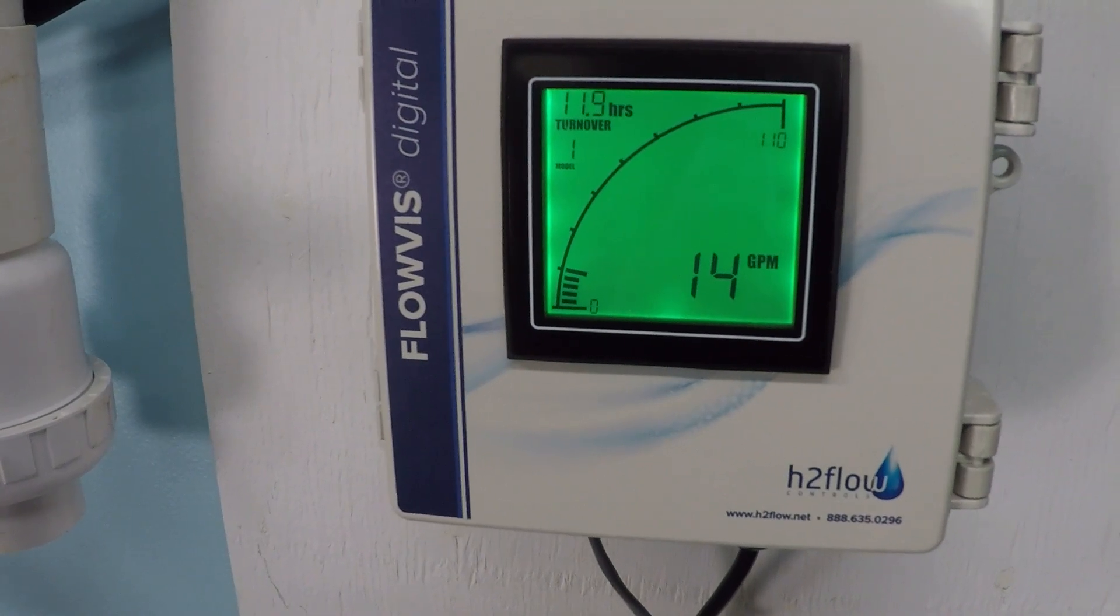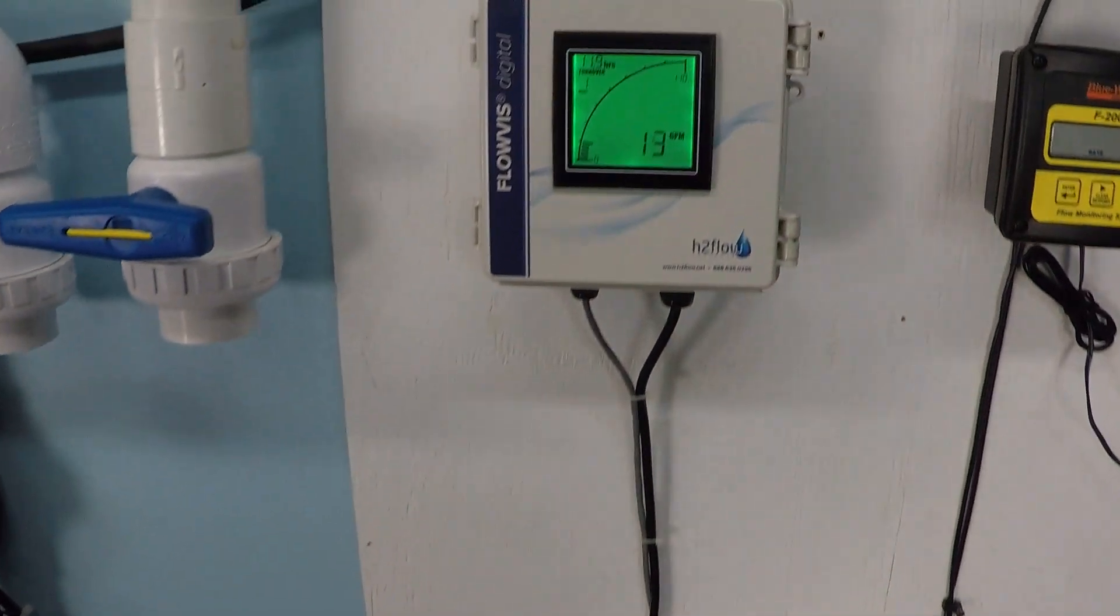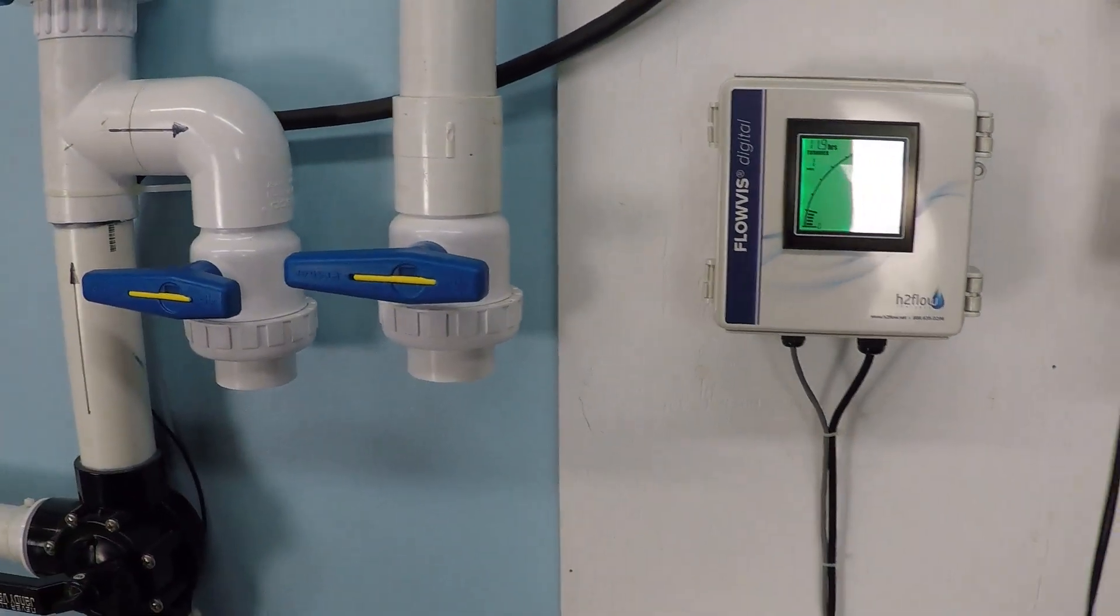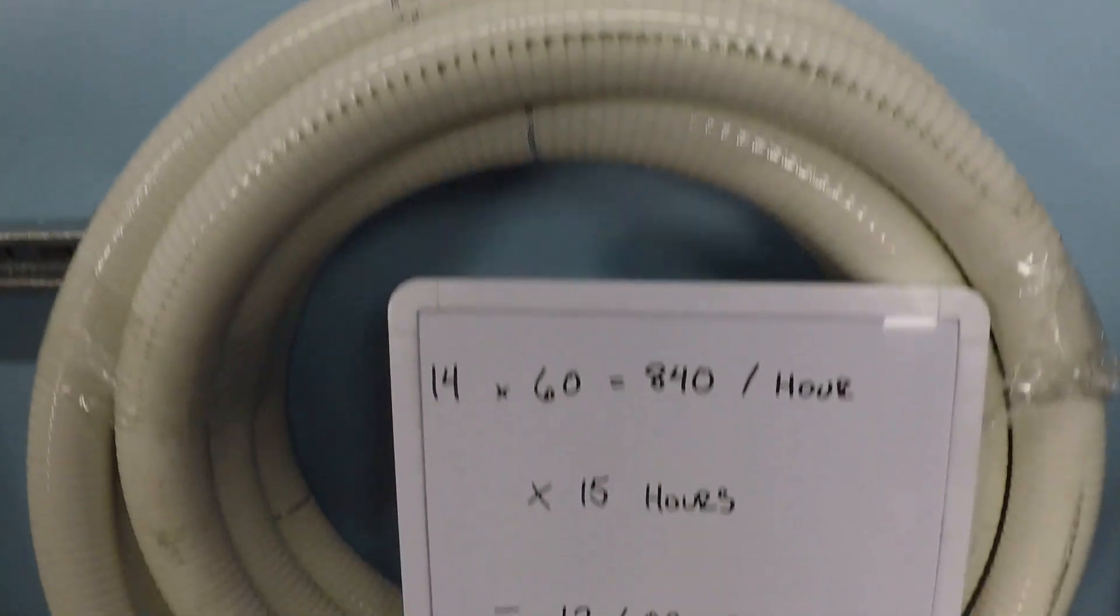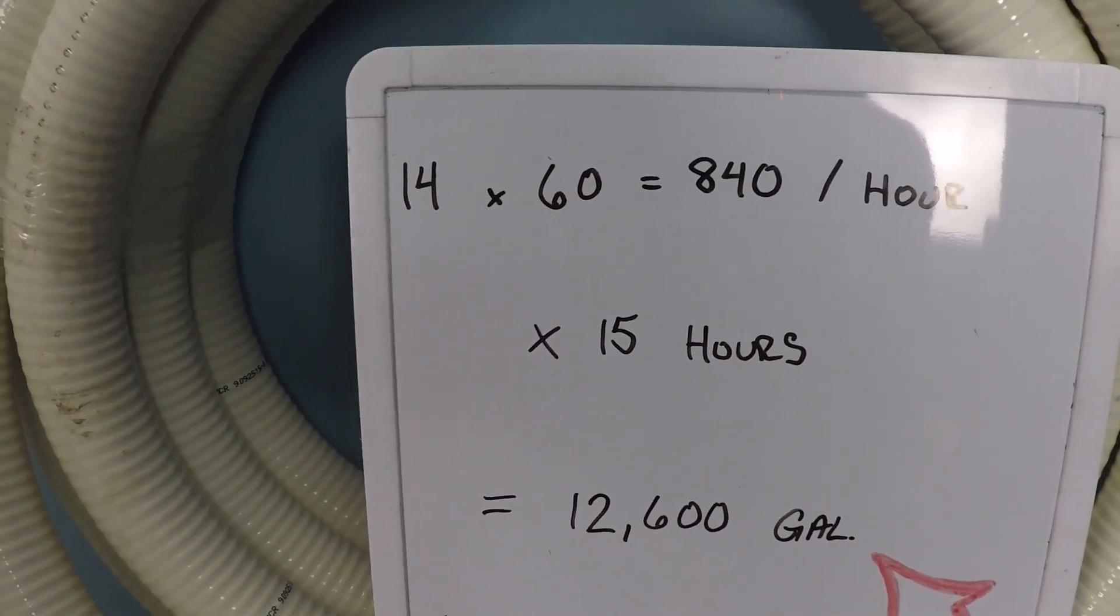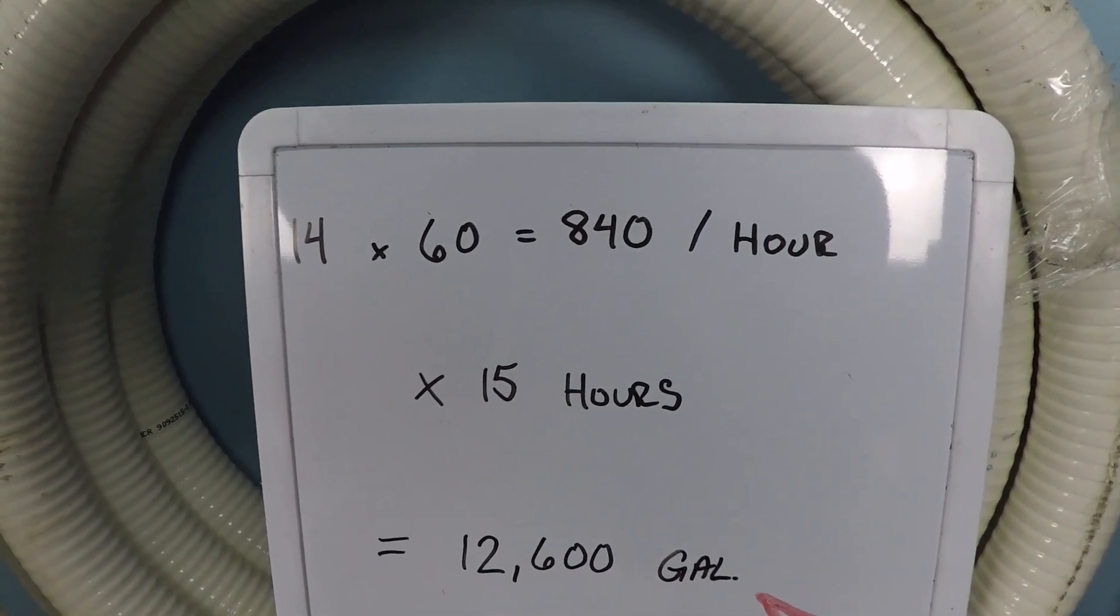So what if you ran your pump like that for 15 hours? Let's break down that equation. If you've got 14 gallons per minute times 60 minutes, that gives you 840 gallons per hour.